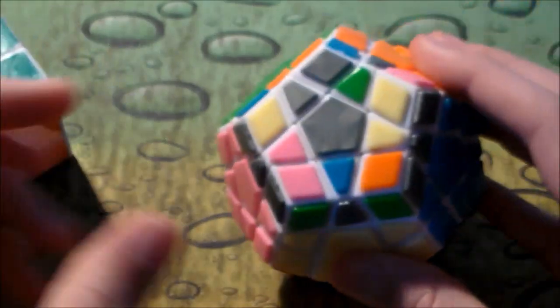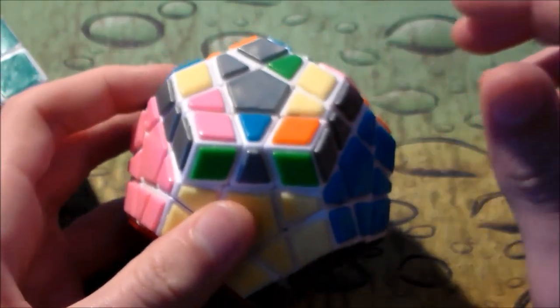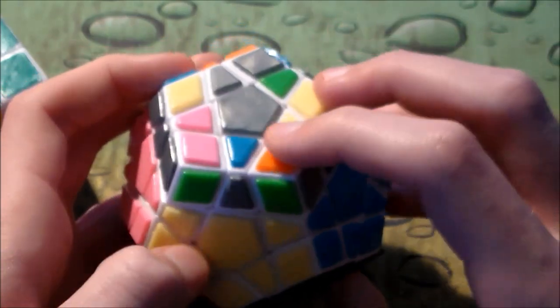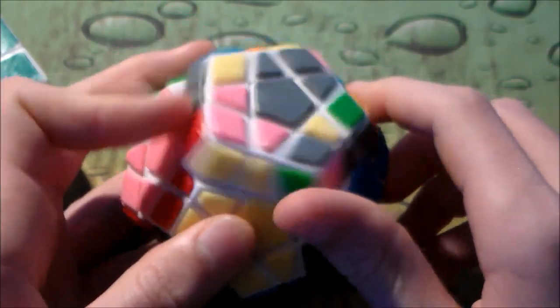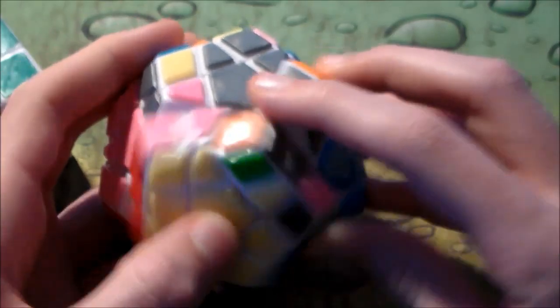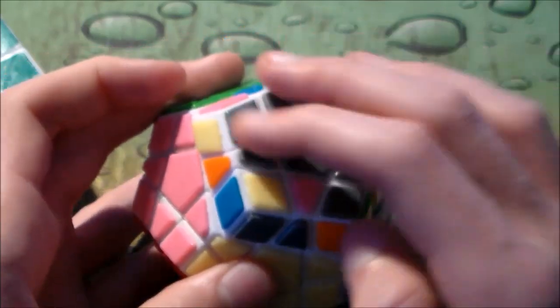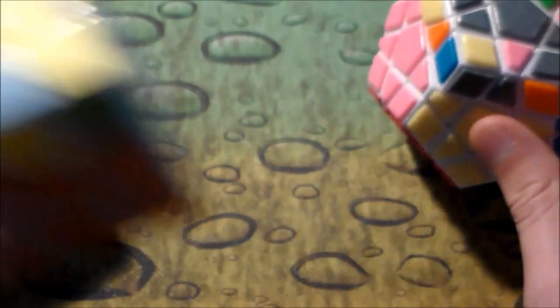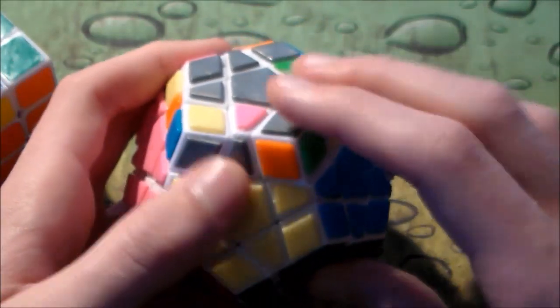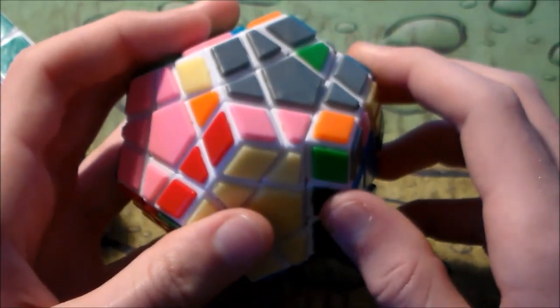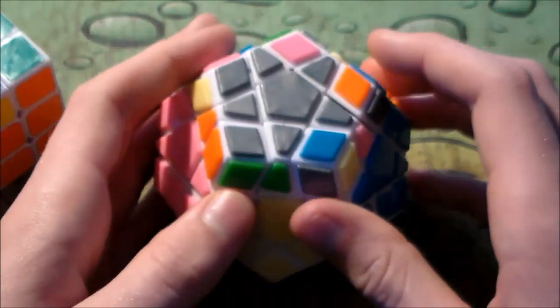This is how it goes. It combines the two previous algs that I showed you, and it goes like this: F U R U prime R prime F prime, and then we do a U prime. And then we see we have this bar, which is the same thing as this on megaminx. So now you just go F R U R prime U prime F prime.